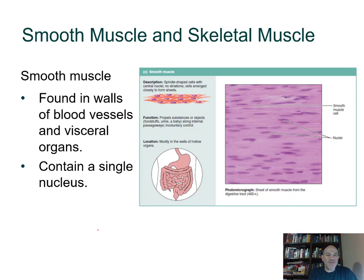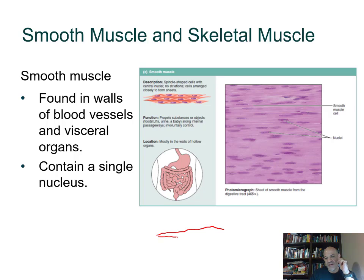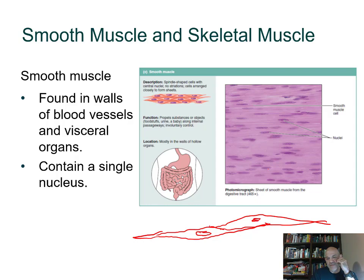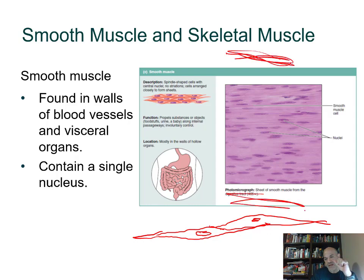Smooth muscle is found in visceral organs — hollow organs like the urinary bladder, stomach, intestine, and blood vessels, where it can constrict arteries to reduce blood flow. Smooth muscle cells are long and spindle-shaped (fusiform), tapering at the ends, with one central elongated nucleus. They don't have the striated banding pattern. Smooth muscle is involuntary.